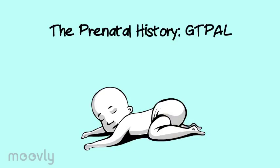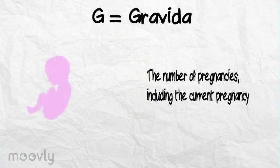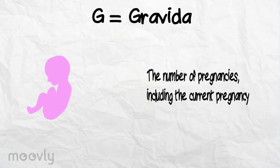The Prenatal History: GTPAL. Gravida is the number of pregnancies, including the current pregnancy and pregnancy losses. Any multiple pregnancy, like twins or triplets, counts as one pregnancy.